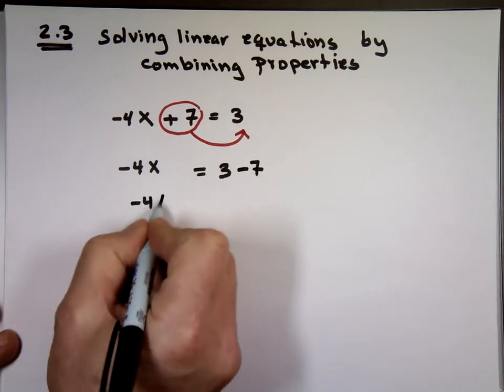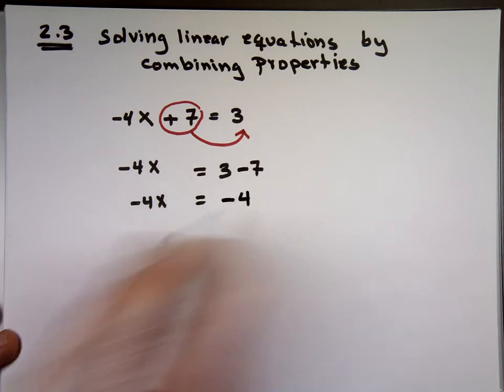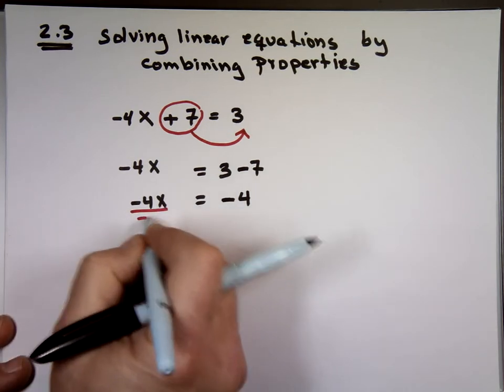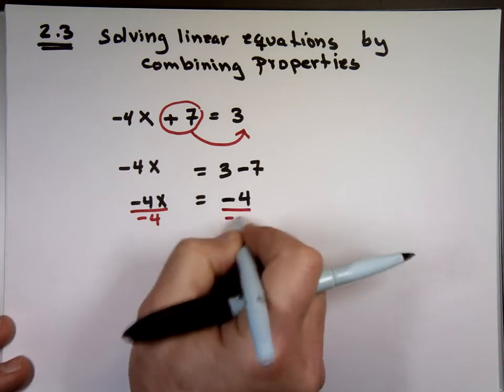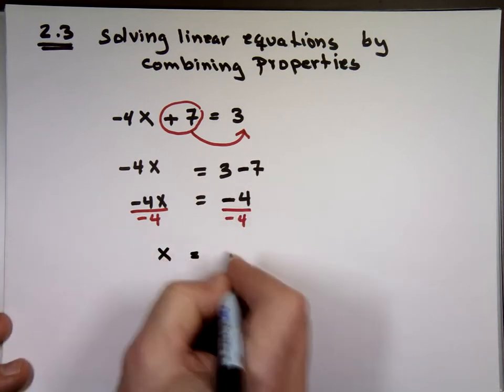Negative 4x equals what? What's 3 minus 7? Negative 4. Now we have a multiplication. What is the opposite to multiplications? We divide. And x will have to be what? 1.